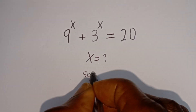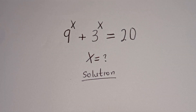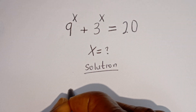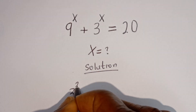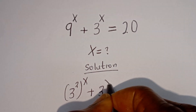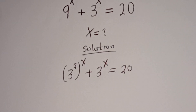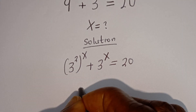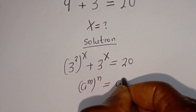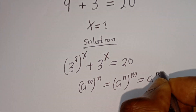Solution. Here, 9 to the power of x can be written as 3 squared to the power of x, plus 3 to the power of x, is equal to 20. Take note that if you have a to the power of m to the power of n, this is equal to a to the power of n to the power of m, which is equal to a to the power of mn.